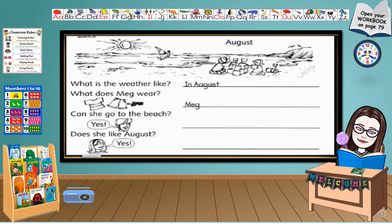Next one. What is the weather like? What does Meg wear? Can she go to the beach? Does she like August?